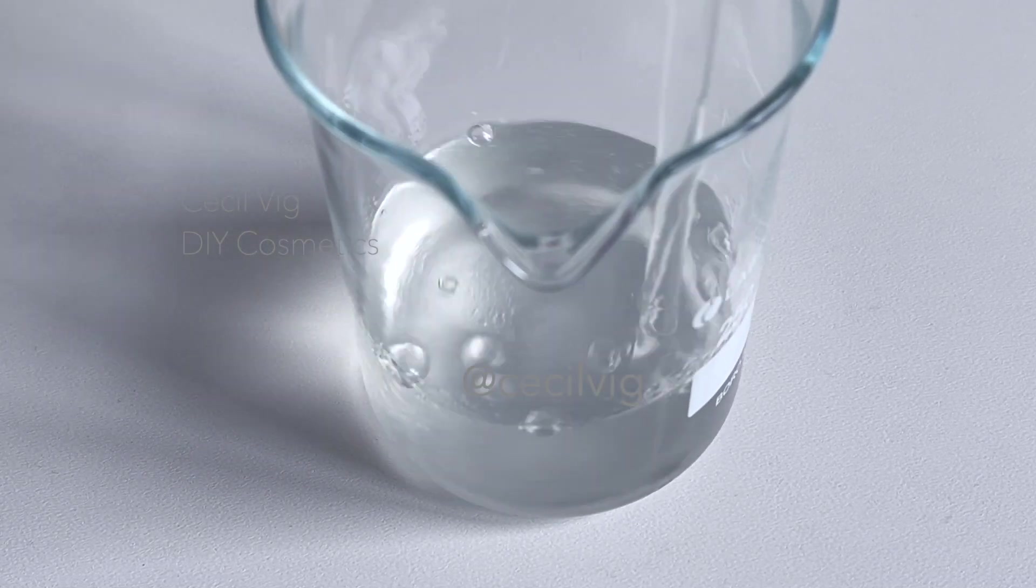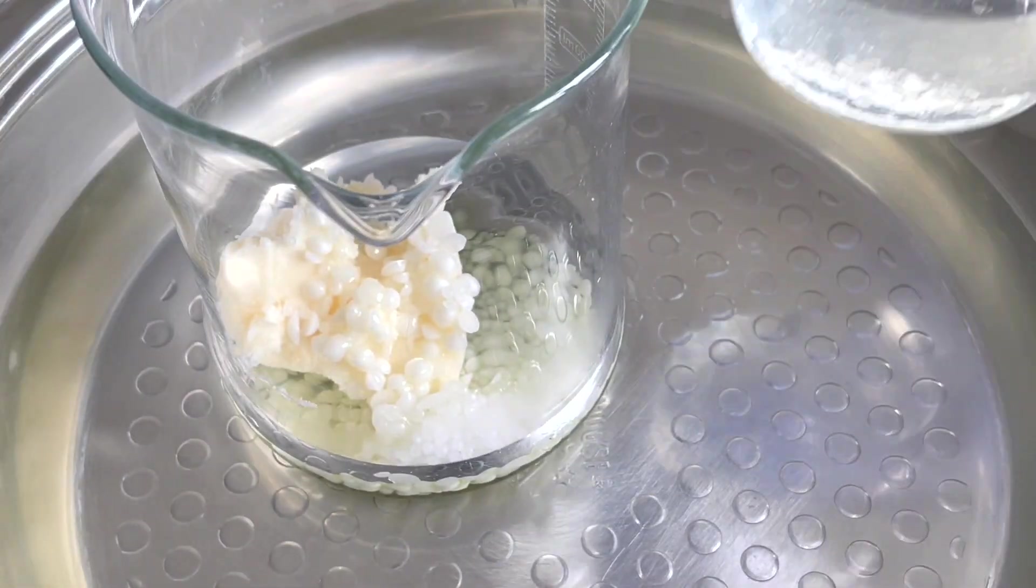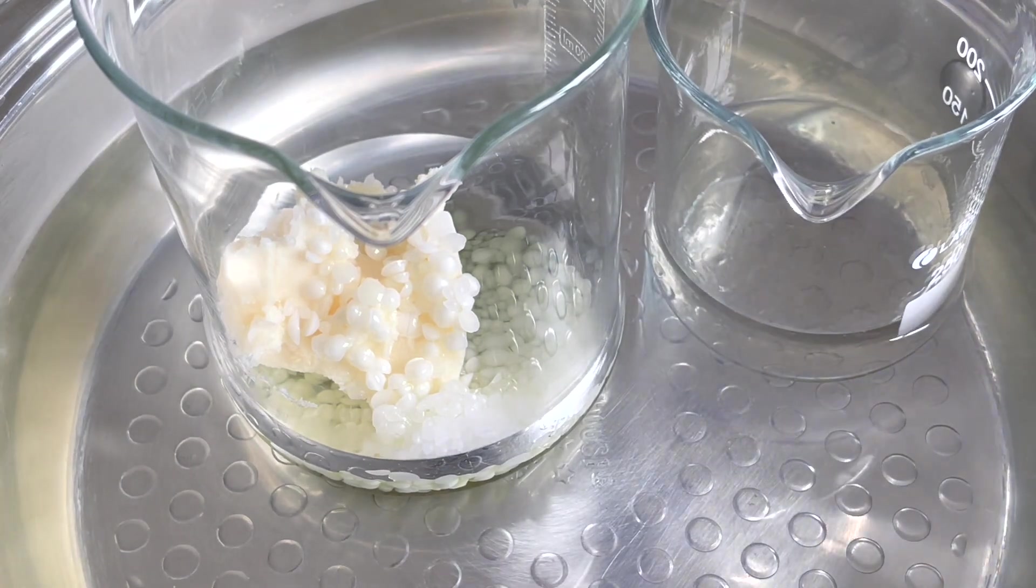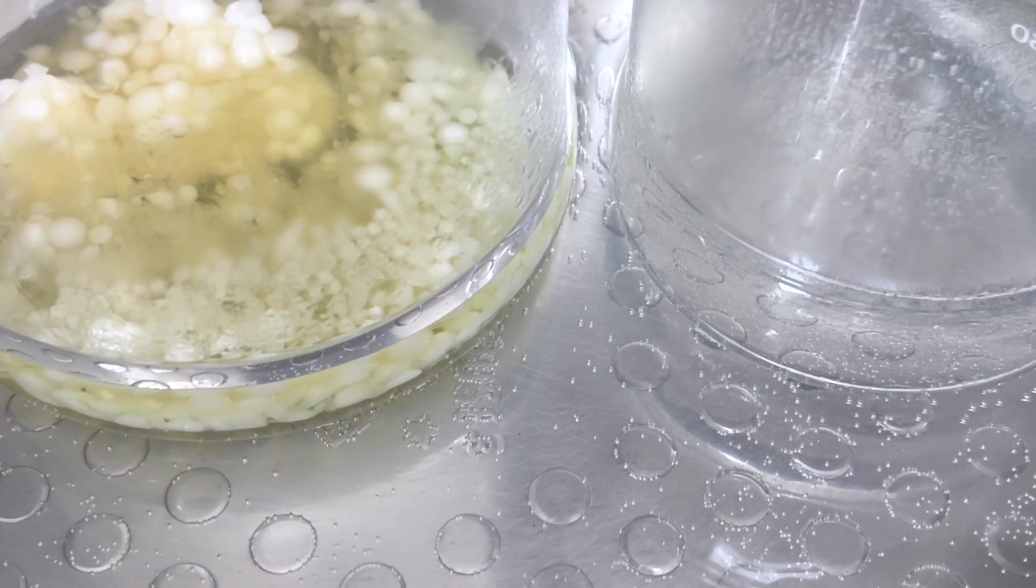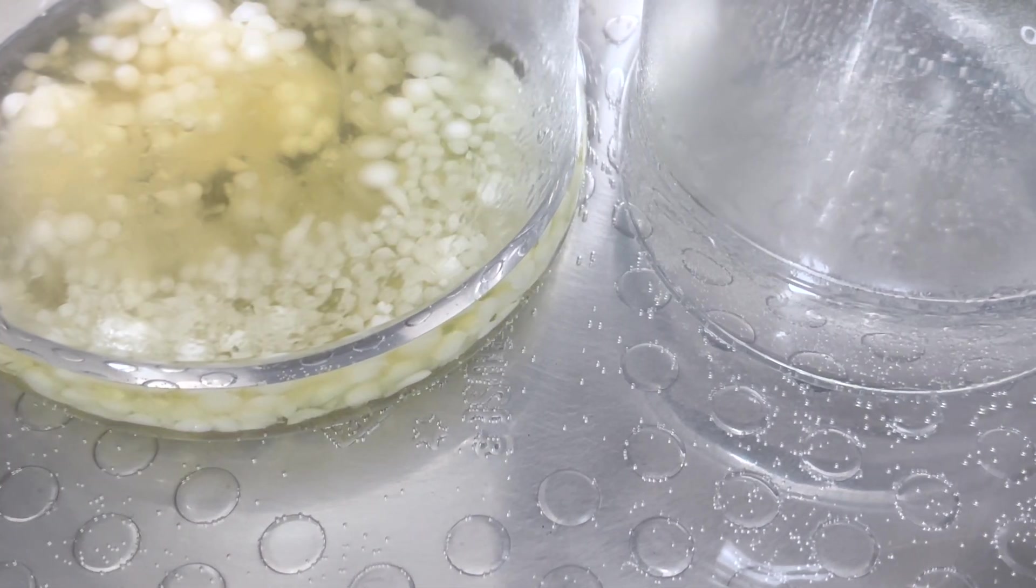Mix well, then place both beakers in a water bath and heat on low to medium heat to about 70 degrees Celsius using the double boil method.